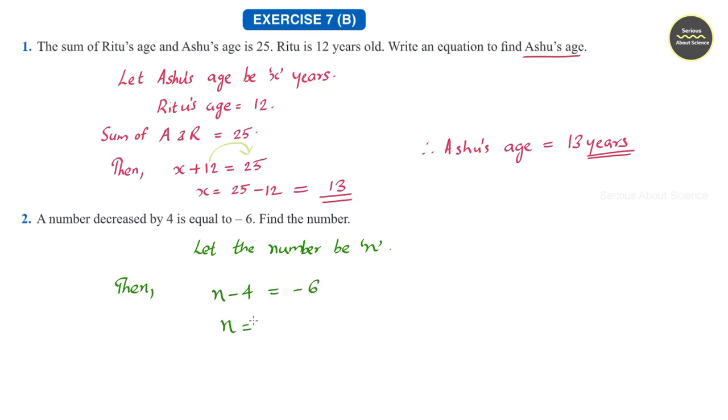We can use the transposition method again. Taking minus 4 to RHS, it becomes minus 6 plus 4 which is equal to minus 2. Therefore, the number is minus 2.